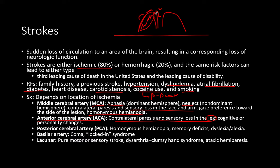The lateral area is MCA and the inner area is ACA, which is primarily manifested in the lower extremities. For a posterior cerebral artery infarct, we're looking mostly at vision loss because the PCA is very important for the occipital lobe and visual processing system. Look for homonymous hemianopia again.